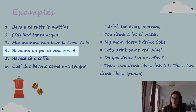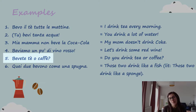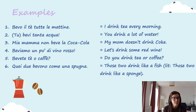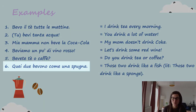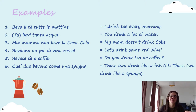Beviamo un po' di vino rosso — Let's drink some red wine. Bevete tè o caffè? — Do you drink tea or coffee? Quei due bevono come una spugna — Those two drink like a fish. Literally it translates as 'those two drink like a sponge' — they can absorb a lot of drink. And it generally refers to alcoholic beverages.